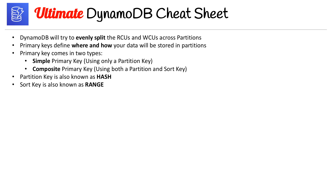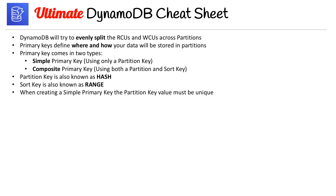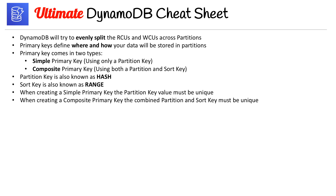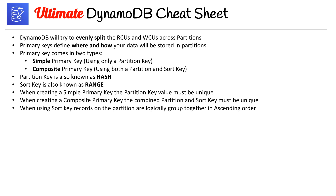The reason they used to be called hash and range isn't clear, but they were changed. When using the CLI or the SDK they still call them hash and range, so it's important to know both. When creating a simple primary key, the partition key value must be unique. When creating a composite primary key, the combined partition and sort key must be unique. When using a sort key, records on the partition are logically grouped together in ascending order.